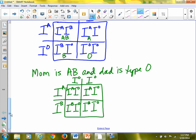So for this one, you would have a 50% chance of having this genotype, AO, and 50% of having this genotype, BO. So you have a 50% chance of being type A, a 50% chance of being type B.